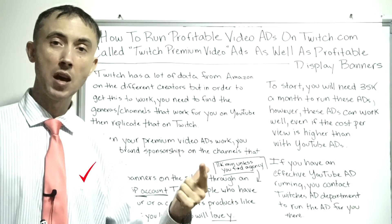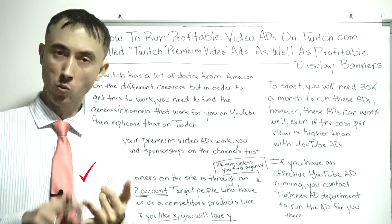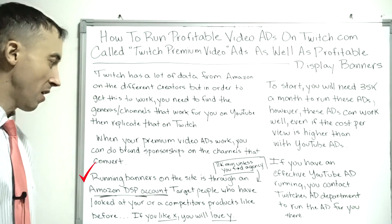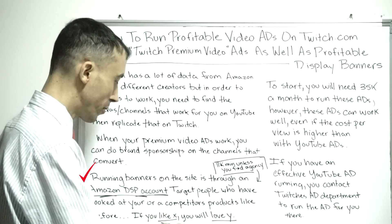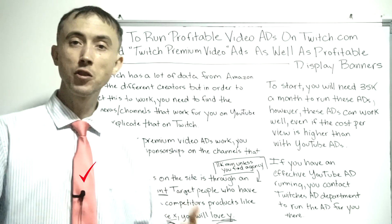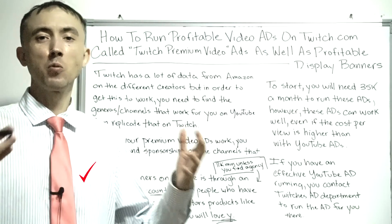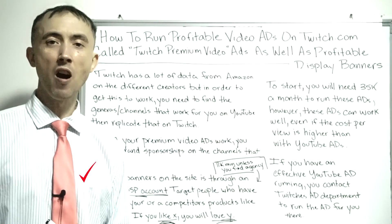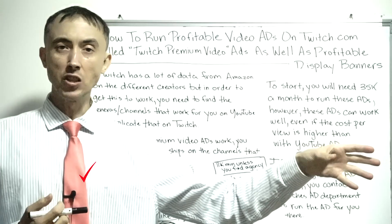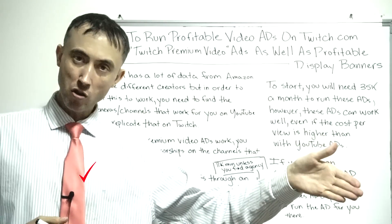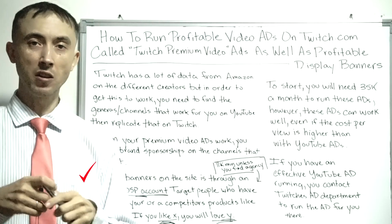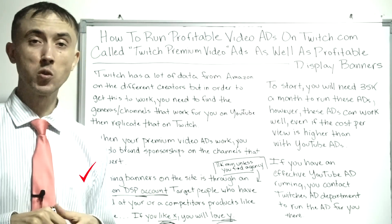Depending on whether the product has repeat buys or just one-time purchases, the messaging changes. If it's a product people buy many times — say a food product — I'll say something like 'If you like Doritos, you're going to love our product.' That says so much in such a small amount of space. We know you buy Doritos, you're on the Doritos page on Amazon, so you should give our product a try. There's no way you like Doritos and won't love our product — then you get them hooked.